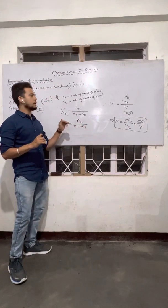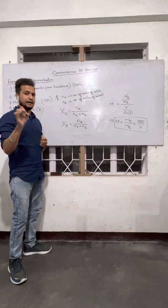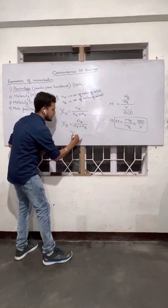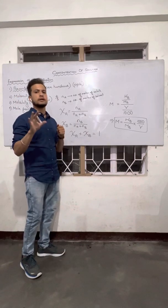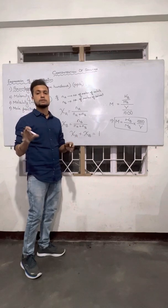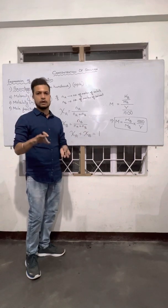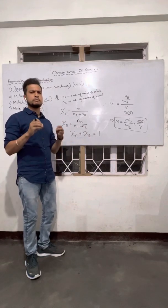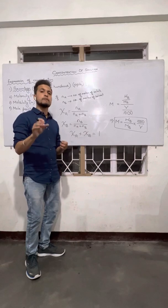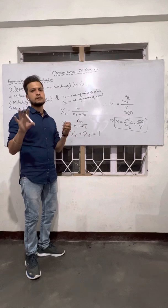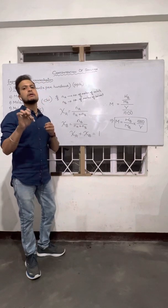A very important point: whenever you take the sum of the mole fractions, χA + χB, it should always equal one. So whenever you solve problems in mole fraction and your answer is 1-point-something or 2-point-something, that is definitely wrong — mole fraction can never be greater than one. The sum of mole fractions of any number of components must equal one. And if a component's mole fraction is one, that means there is only one component, so it cannot be a solution. For a solution, mole fraction must always be less than one.